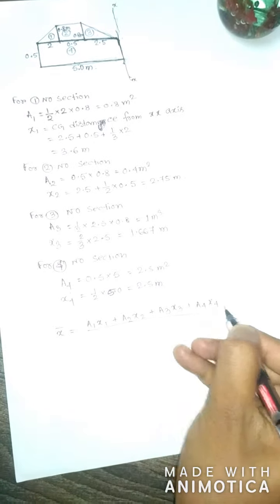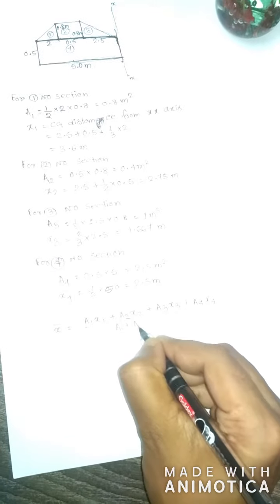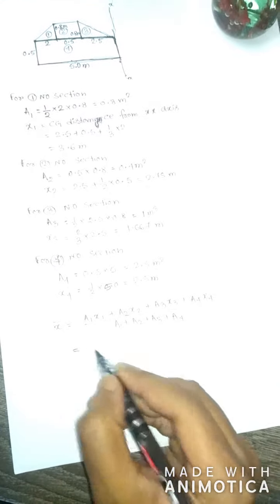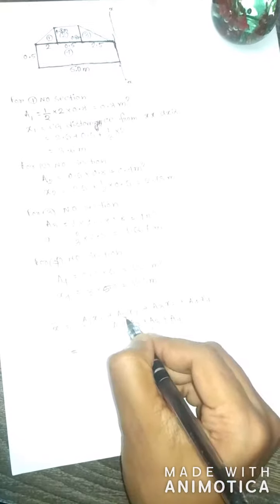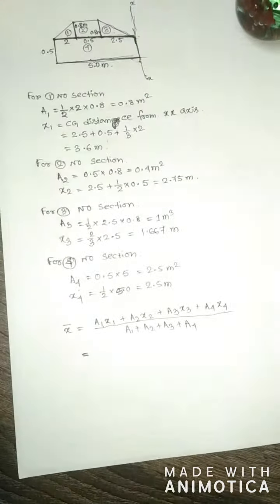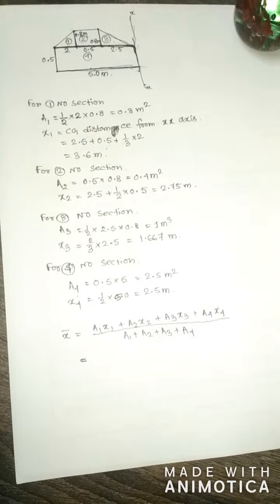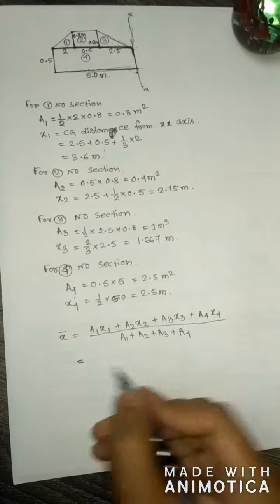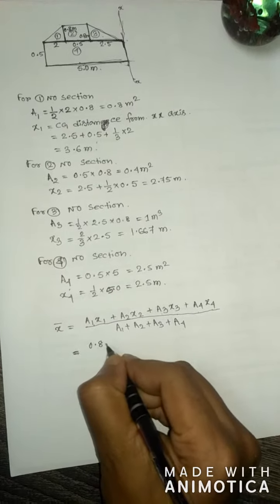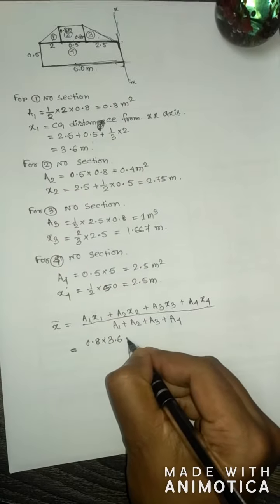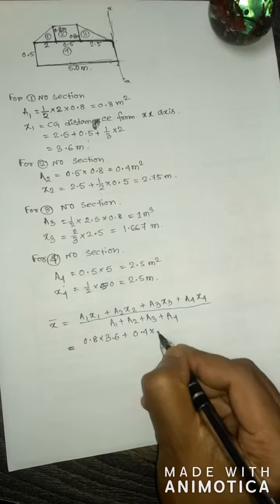The total CG distance from the XX axis for the total structure: x-bar equals (A1·x1 plus A2·x2 plus A3·x3 plus A4·x4) divided by (A1 plus A2 plus A3 plus A4). We now know all values of A1, x1, A2, x2, A3, x3, and A4, x4.